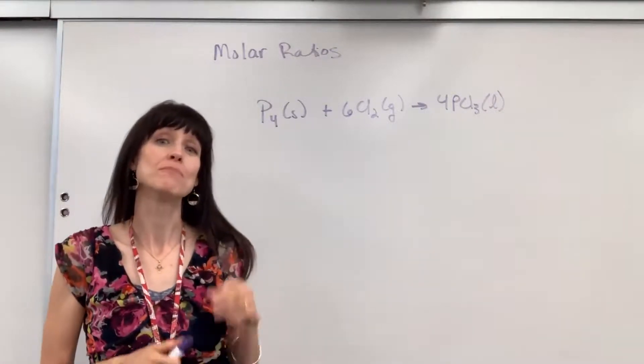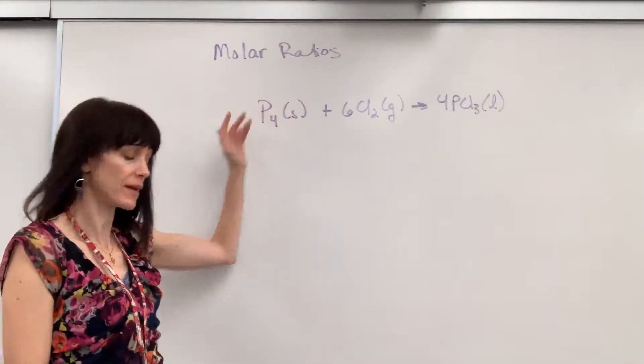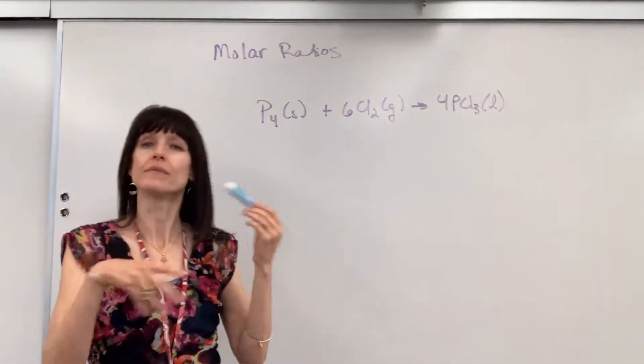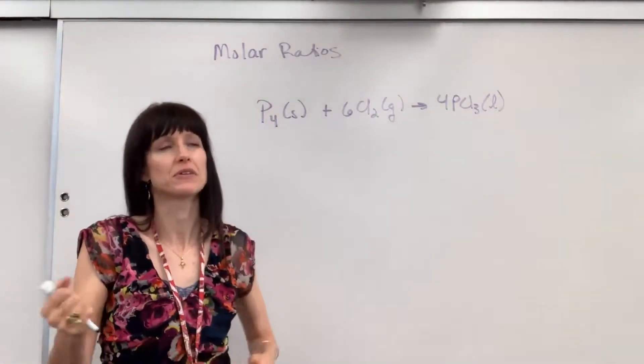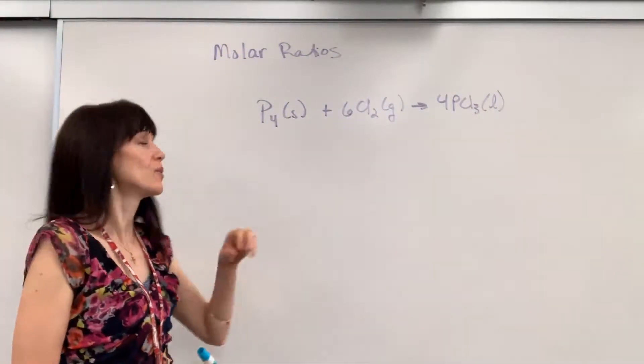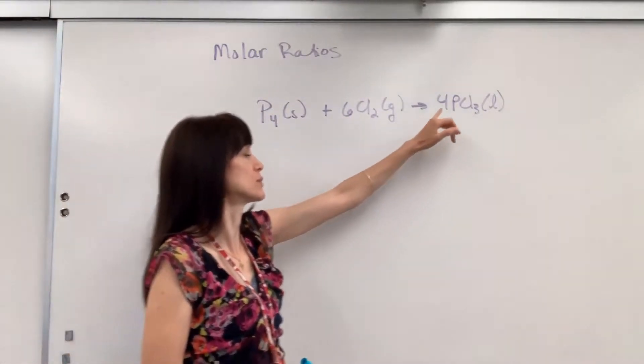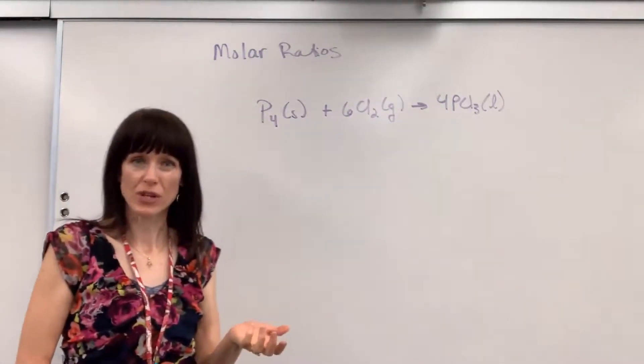Hello, we're going to talk about molar ratios today. I have an equation up here and you will recall from the basics about learning about chemical reactions that the coefficients are moles. We can say one mole of phosphorus reacts with six moles of chlorine to produce four moles of phosphorus trichloride.